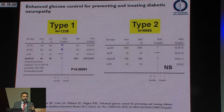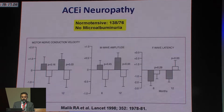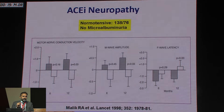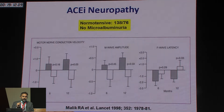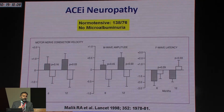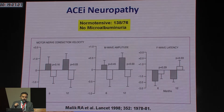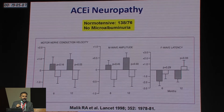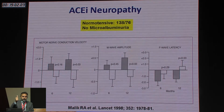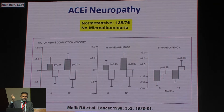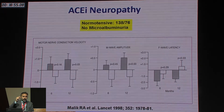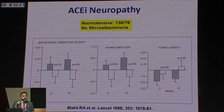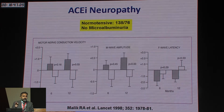Beyond glucose, what else can you do? You can give an ACE inhibitor. There are data — including trials from Italy — showing that if you take diabetic patients with normal blood pressure and no microalbuminuria, who you might think don't need an ACE inhibitor, treating them with one can actually improve their nerve conduction and improve their neuropathy.